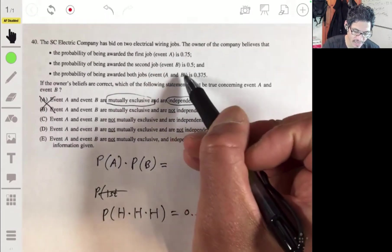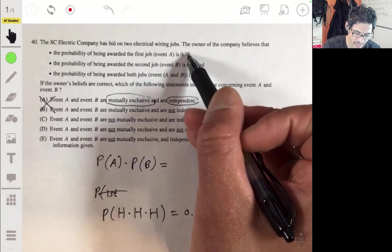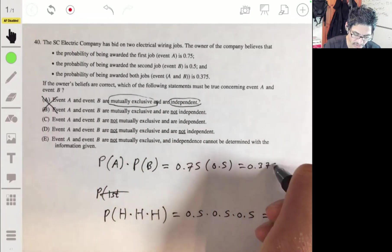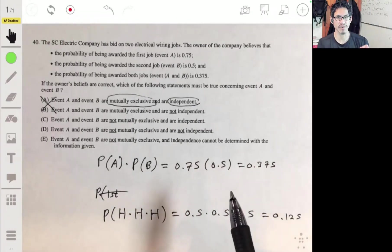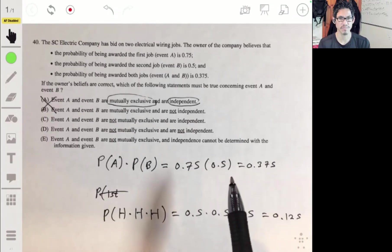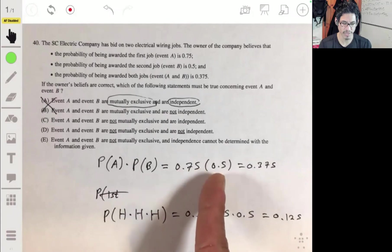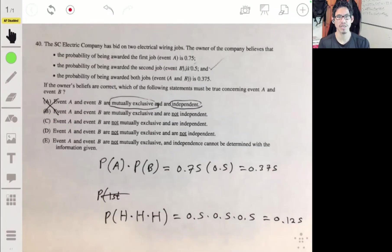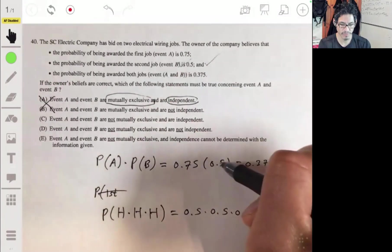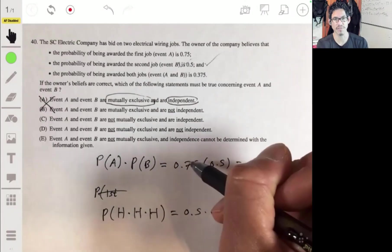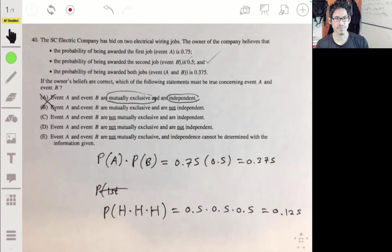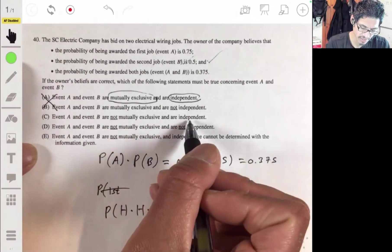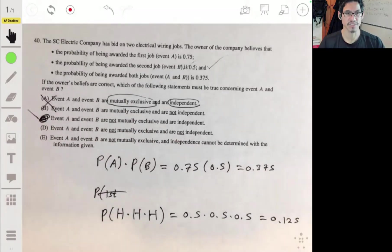Here you can see that you can get events A and B by simply multiplying them together. If you do 0.75 times 0.5, you're going to get 0.375. That means they're going to be independent because it doesn't matter that event A occurred, event B is still 0.5. If they were not independent, then the 0.5 could be something else if event A occurred. That's really the best way I would think about it and the simplest way. They are independent and they're not mutually exclusive, and the answer would be C.